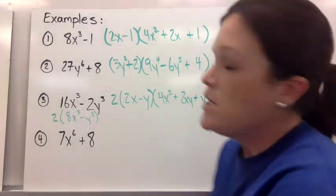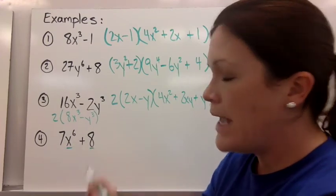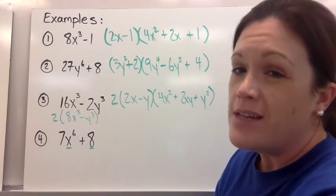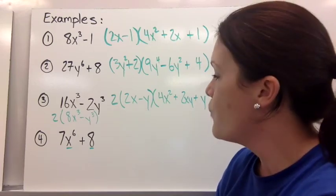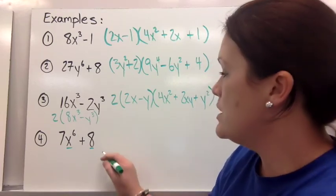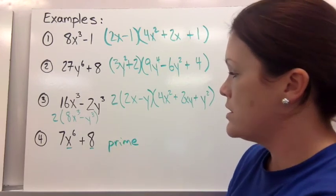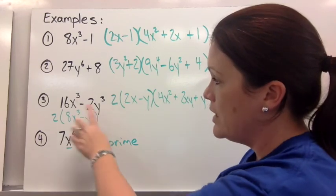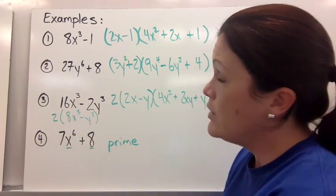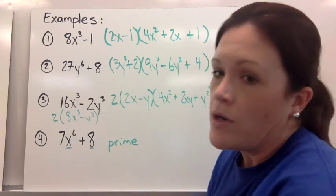All right, let's look at number 4. You have 7x to the 6th, 8. The x to the 6th and the 8th are perfect cubes, but 7 is not. Can I take anything out? No. So this one would actually be prime. So you don't want to force a difference or a sum of cubes to work out. It only works when it happens to be a perfect cube, and you could be adding or subtracting, but sometimes it might look like it would work out.